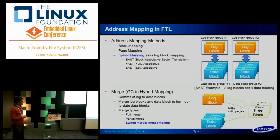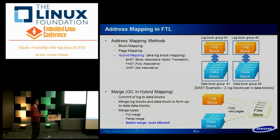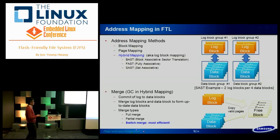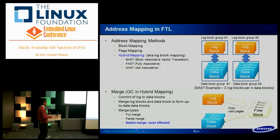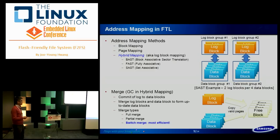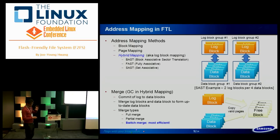As an example of set-associative hybrid mapping: data blocks are grouped, and each group has a specific number of log blocks. For example, four data blocks per group and two log blocks assigned per group. When we update any page in a data block group, the page is logged in the log block dedicated to that block group. This way we can have temporal and spatial locality within the data block group. Multiple data block groups can be concurrently logging at the same time.